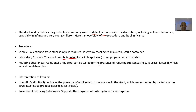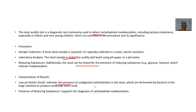Additionally, the stool can be tested for the presence of reducing substances like glucose and galactose, which may indicate malabsorption. Interpretation of results is quite simple: if there is a low pH — meaning more acidic stool — it indicates that undigested carbohydrates in the stool are being fermented by bacteria in the large intestine, producing acid and driving down the pH.